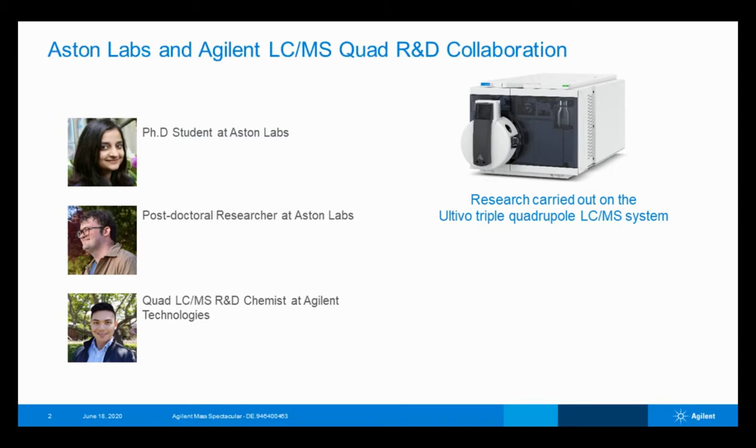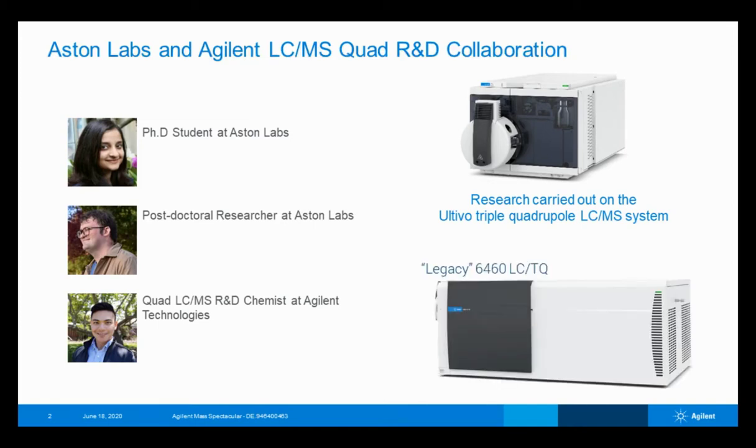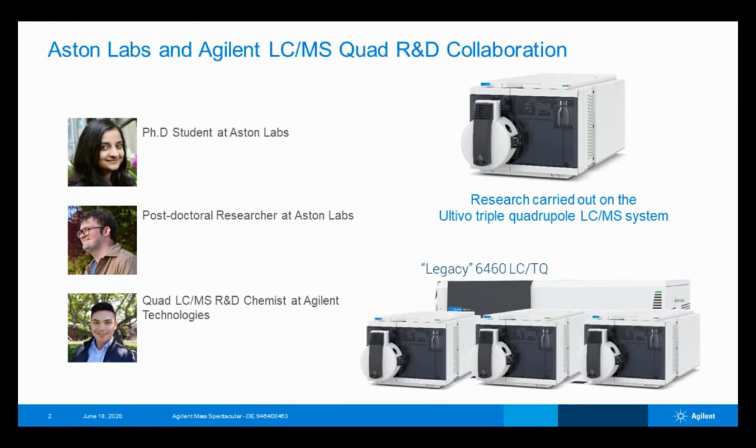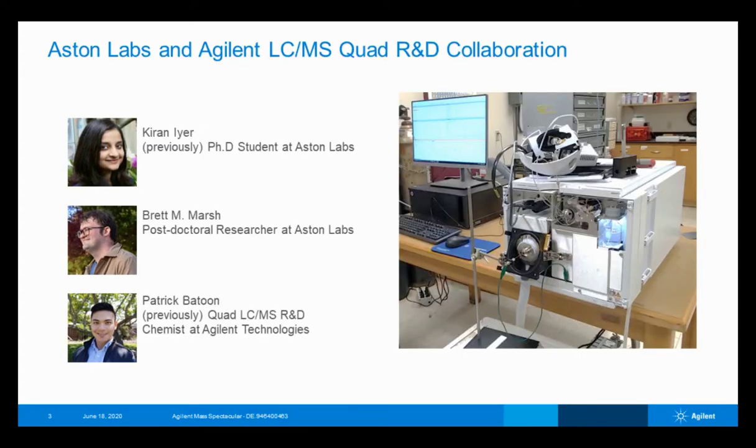The most attractive aspect of Ultivo is its small size compared to other instruments, such as our legacy 6460. As we've developed Ultivo, we did not want to compromise on analytical performance and aim to retain the performance of the 6460 instrument. The nice thing about Ultivo is that for tightly packed, routine laboratories, they are able to fit three times the amount of instrumentation when compared to our legacy instruments. When we first started this collaboration, I was an R&D chemist in the LCMS quadruple R&D group at the time and worked with these two scientists to get the instruments set up and running. Of course, their studies are unconventional in that they have no use for the electrospray ion source that we provide and have opted to use their own homemade nanospray source.